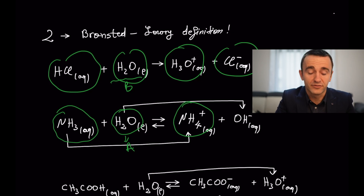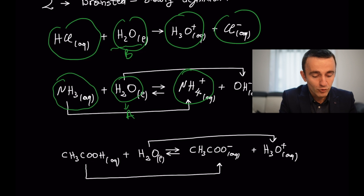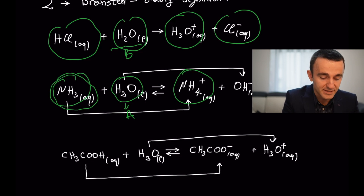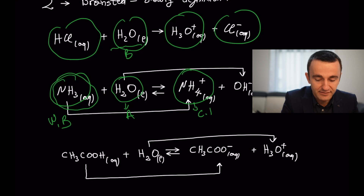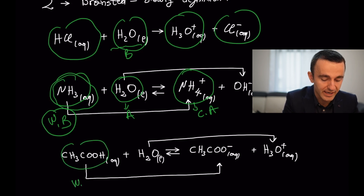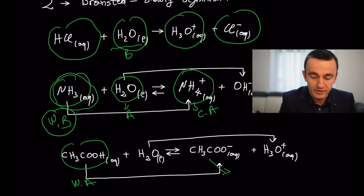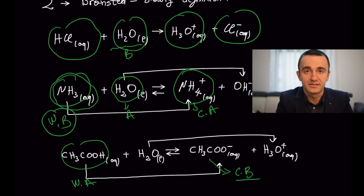Such substances are called amphoteric. Water is an amphoteric substance. Something worth mentioning in the Brønsted-Lowry definition is that ammonia, which is a weak base, turns into the conjugate acid of that weak base. And if we take the case of acetic acid, which is a weak acid, it turns into its own conjugate base. These conjugate pairs are important especially for weak acids and bases when doing acid-base equilibrium calculations.